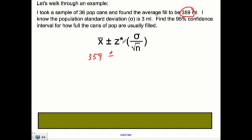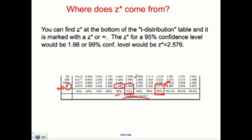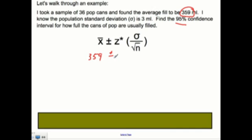Plus or minus Z star, since it's 95%. Go back here, 95% is 1.96. So I put in 1.96 in for Z star times the standard deviation, which was 3 over the square root of N, which was 36 pop cans. So 36 goes here.